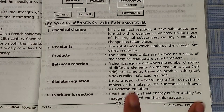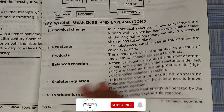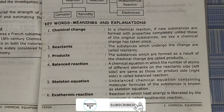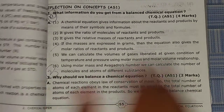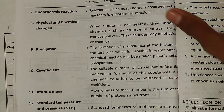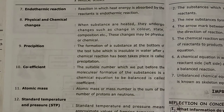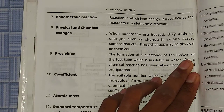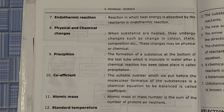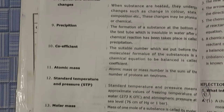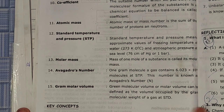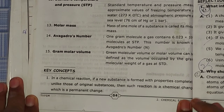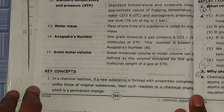In the keywords section we have a total of 15 points, continuously moving to the next pages with keywords. Now we'll see the key concepts — you can see here we have some key concept points, a total of seven points.